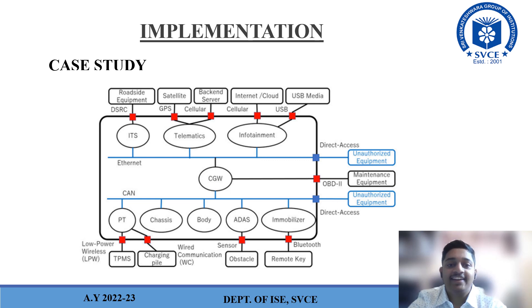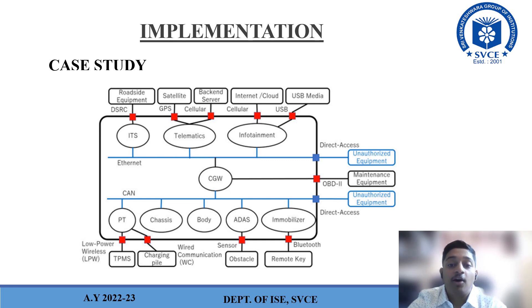Now let us take a case study. This is an architecture example of a connected vehicle as a TOE (Target of Evaluation). This figure shows a typical network structure of the TOE. Functional modules for infotainment, telematics, and an ITS control console are connected via Ethernet network. Functional modules belonging to the control system — powertrain PT, body, and chassis — along with the Advanced Driver Assistance System (ADAS) and immobilizer, are connected via CAN bus network. A central gateway (CGW) also supports both networks.